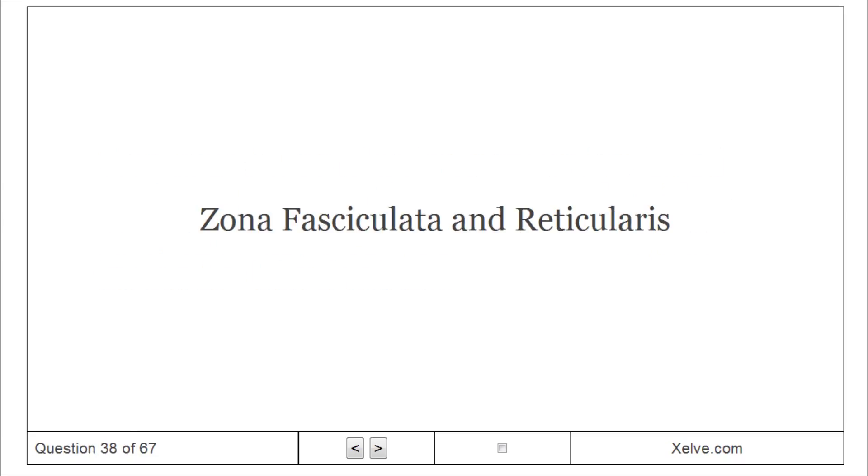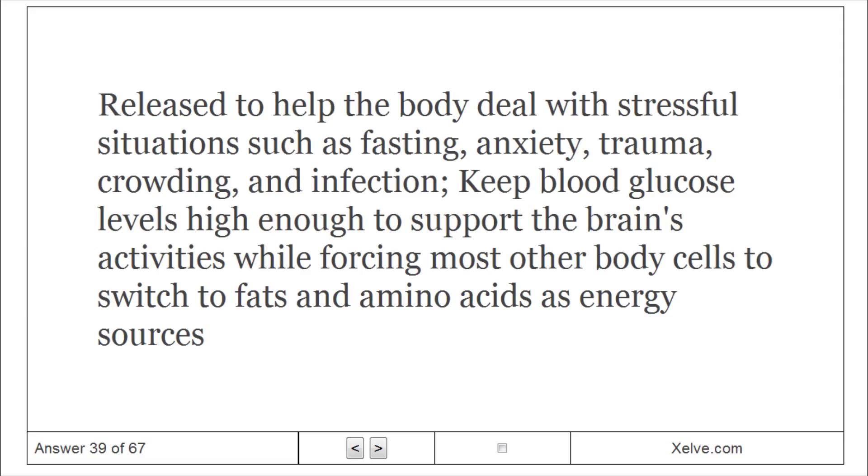Zona fasciculata and reticularis produce glucocorticoids, cortisol. Cortisol is released to help the body deal with stressful situations such as fasting, anxiety, trauma, crowding, and infection. Keeps blood glucose levels high enough to support the brain's activities while forcing most other body cells to switch to fats and amino acids as energy sources.